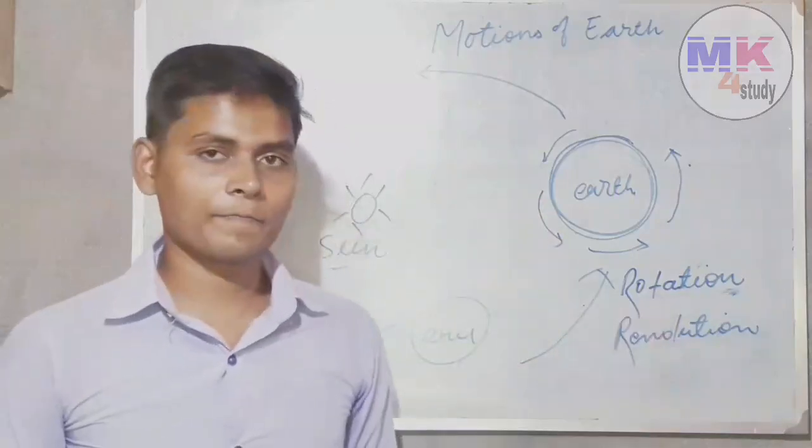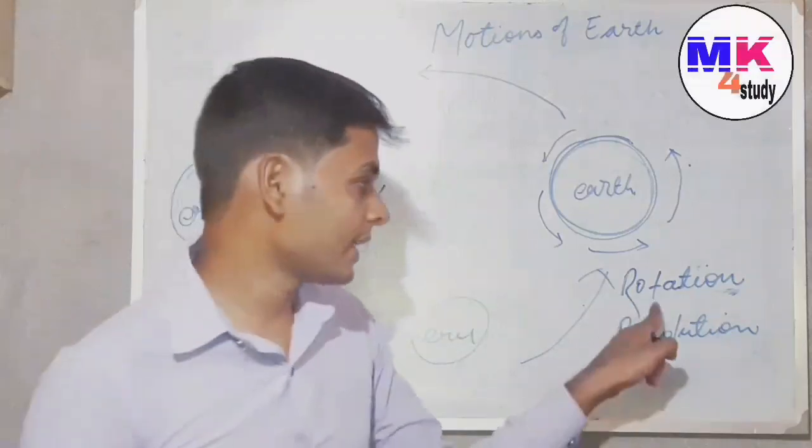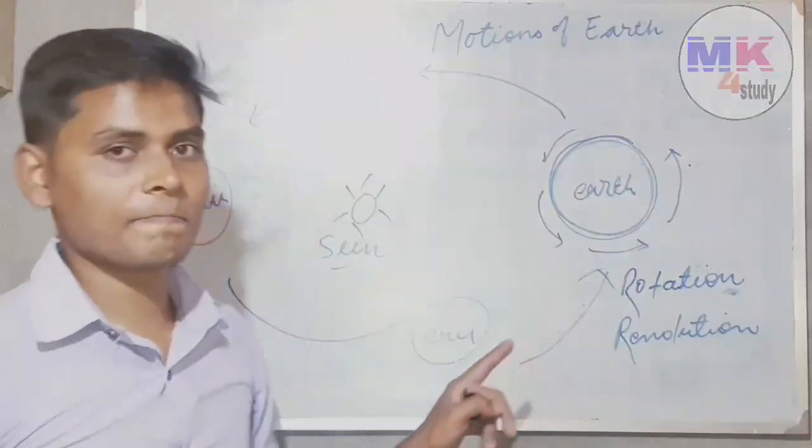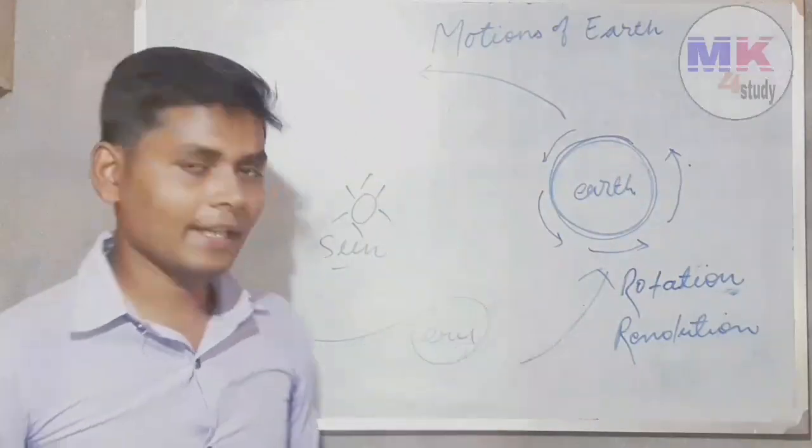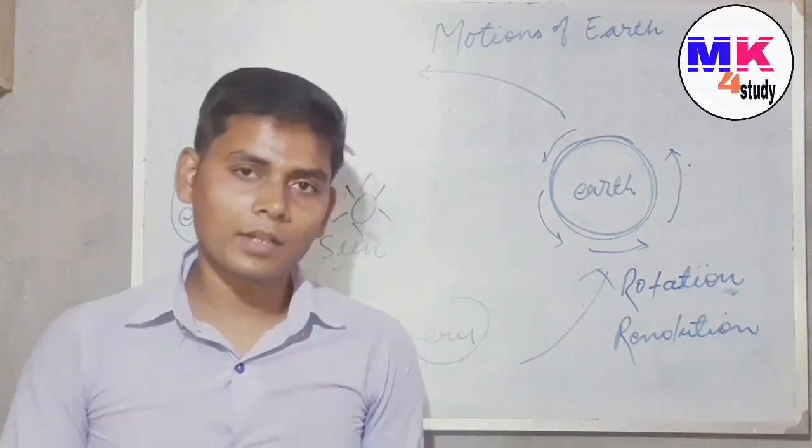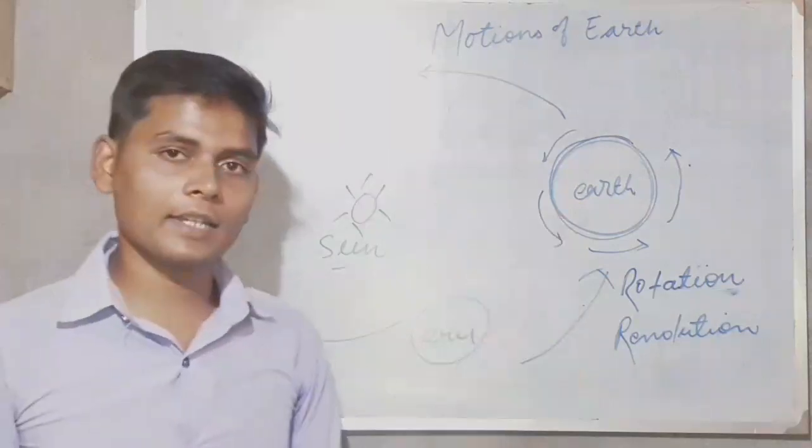By which day and night occurs, and it takes 24 hours to complete one rotation. Again I am repeating: rotation is the movement of earth in its own axis, by which day and night occurs, and it takes 24 hours to complete one rotation.